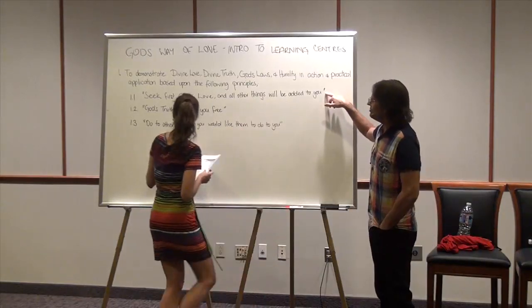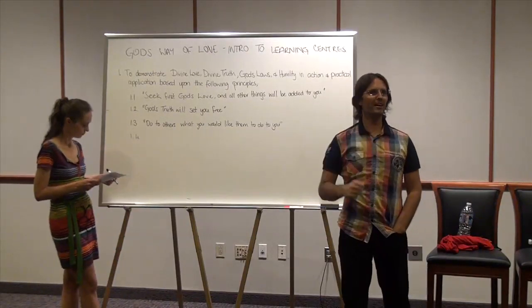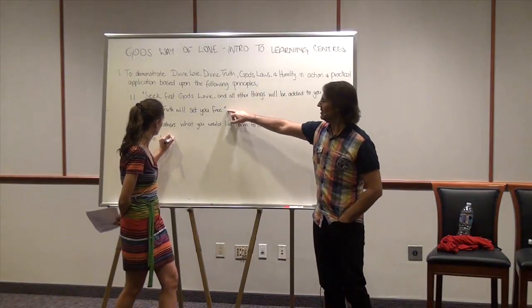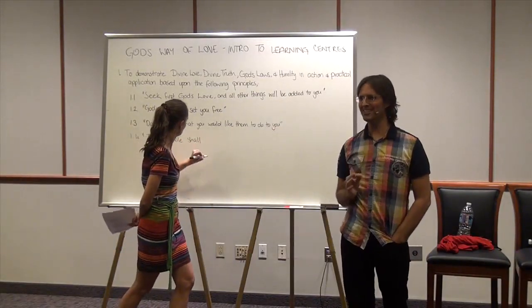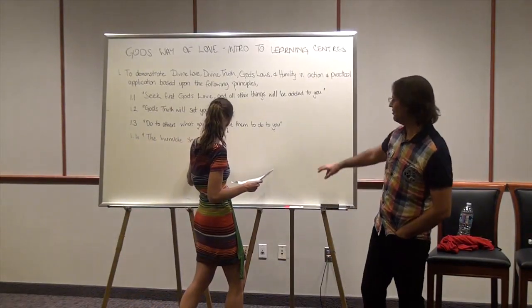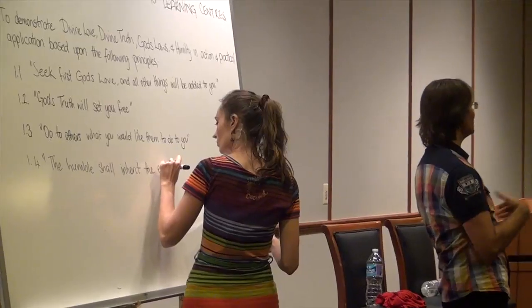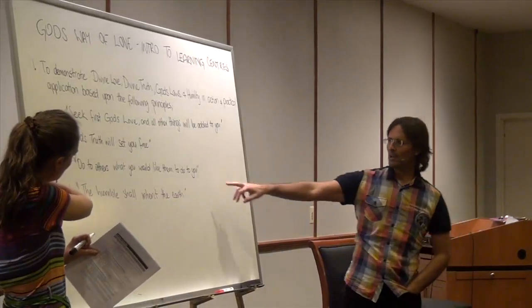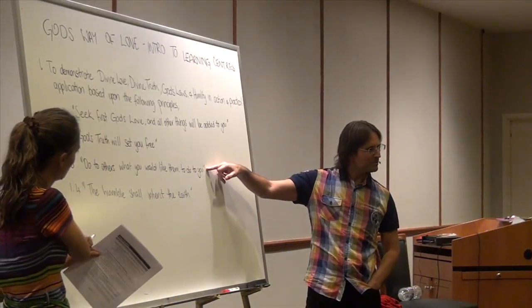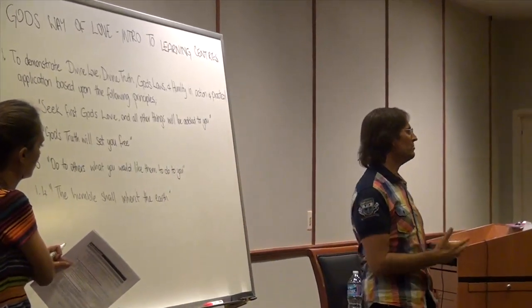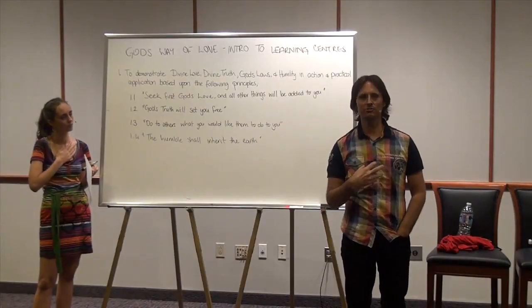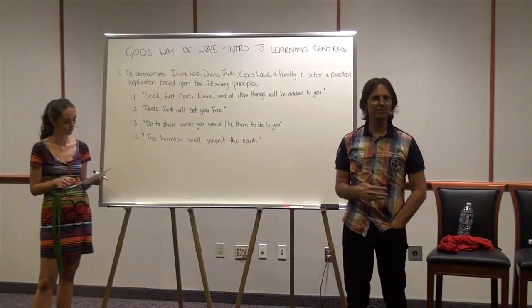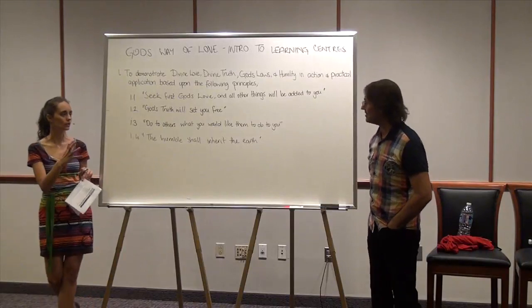The first principle we'd like to illustrate is: if you seek first God's love, all other things will be added to you. The second one is: if you seek God's truth, it will set you free. The third one is: do unto others what you would like them to do to you — what some of you would have heard as the golden rule, which I actually call ethics. And this one is: the humble or the meek will inherit the earth, which is to do with our attitude inside of us.